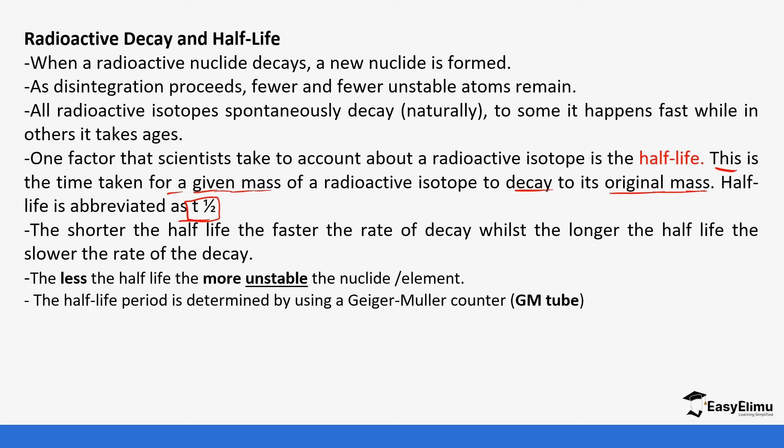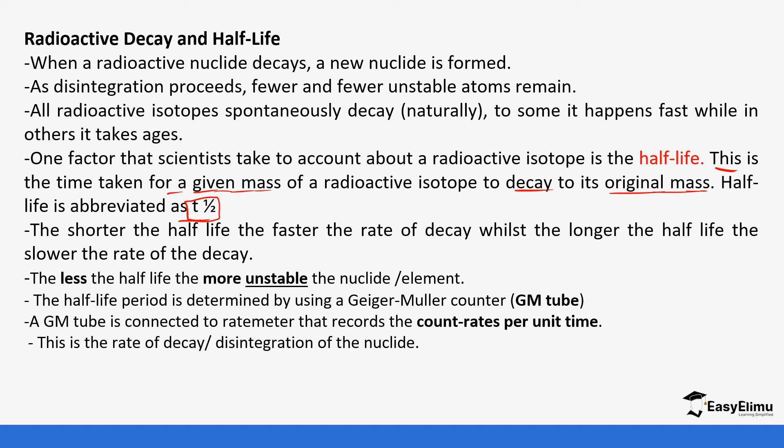The half-life period is determined using the GM tube connected to a thermometer that records the count per unit time. We can also use count rates per unit time when determining half-life. This is the rate of decay or disintegration of the nuclei. If the count rates per unit time fall by half then the time taken is the half-life period.